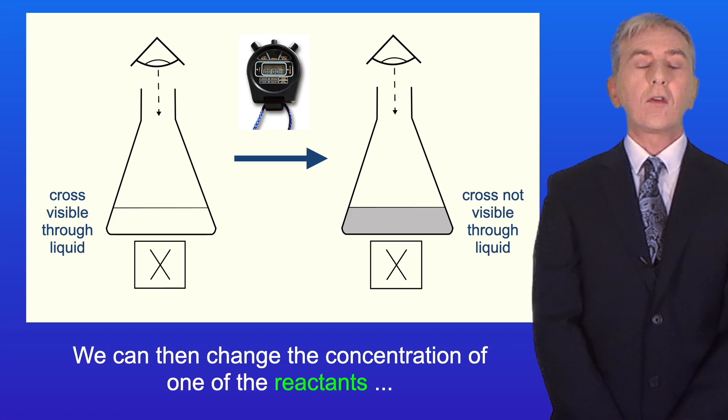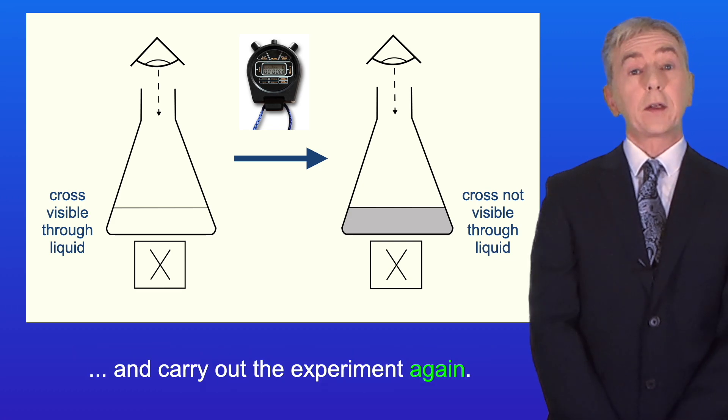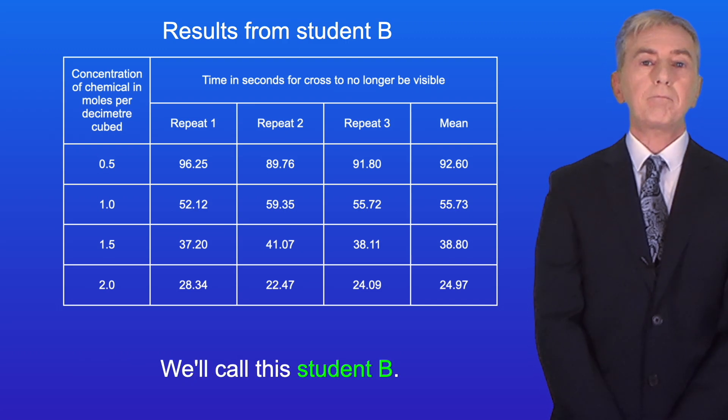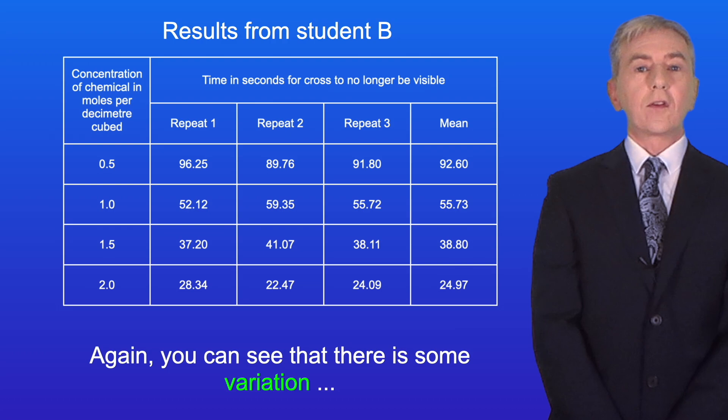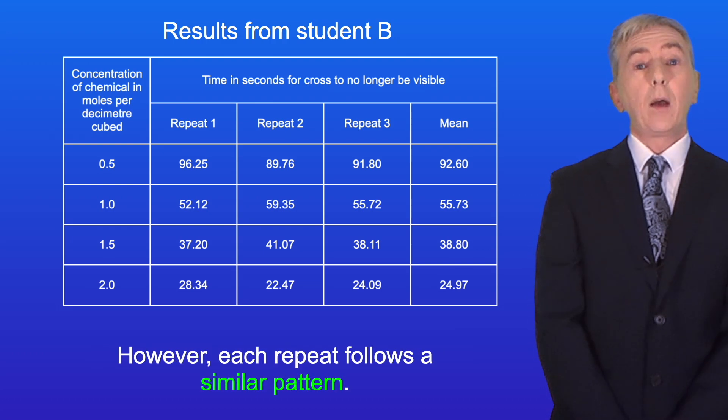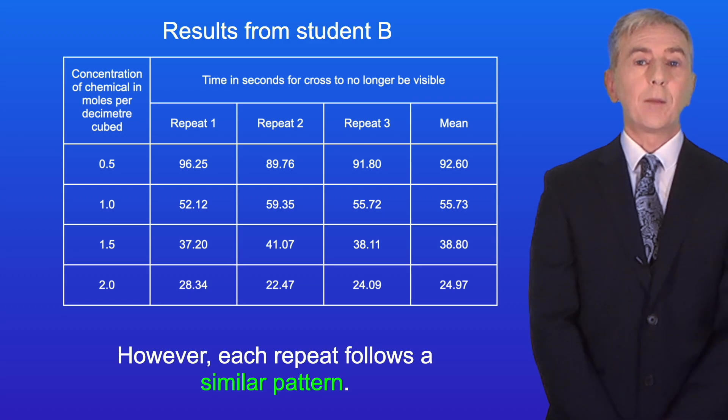I'm showing you a student's results here. We'll call this student B. Again you can see that there's some variation between the repeats due to random error. However each repeat follows a similar pattern.